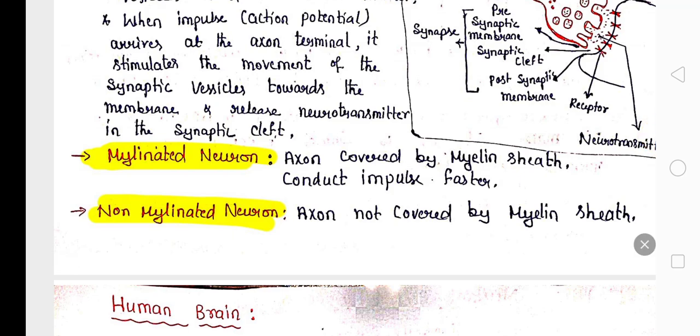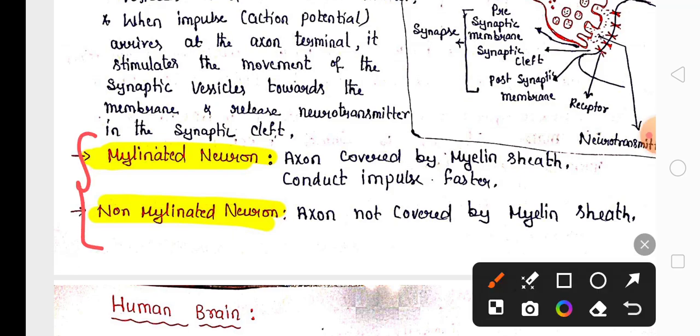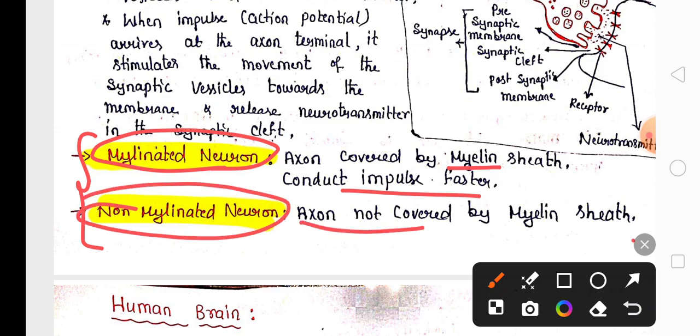Remember the types of neurons based on the myelin sheath. If the neuron axon is covered with myelin sheath, it is called a myelinated neuron where the conduction of impulses is faster. If the axon is not covered, it is called a non-myelinated neuron.